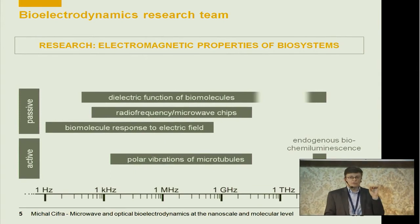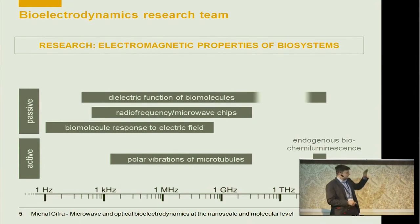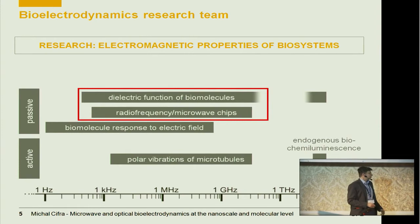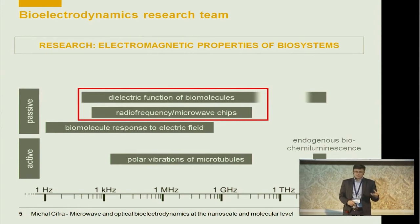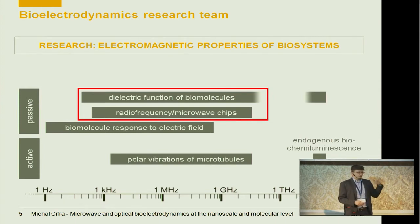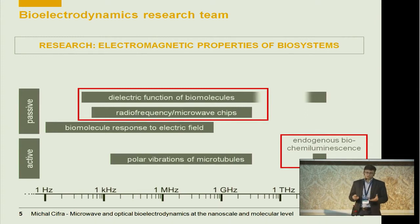Today I will focus on two stories because the time is short. I mapped our research on the frequency scale. First I will speak about the dielectric function of biomolecules and the chips we developed to probe complex permittivity — the fundamental electromagnetic quantity of biomaterials — for small volumes and accurately. Then I will speak about endogenous biological chemiluminescence: the spontaneous emission of light from biological systems due to the biochemical metabolism which takes place in organisms.